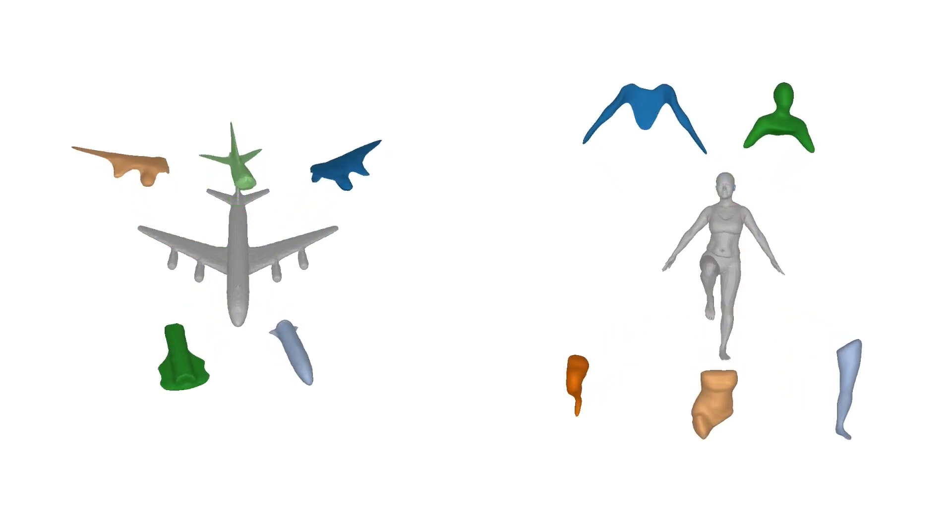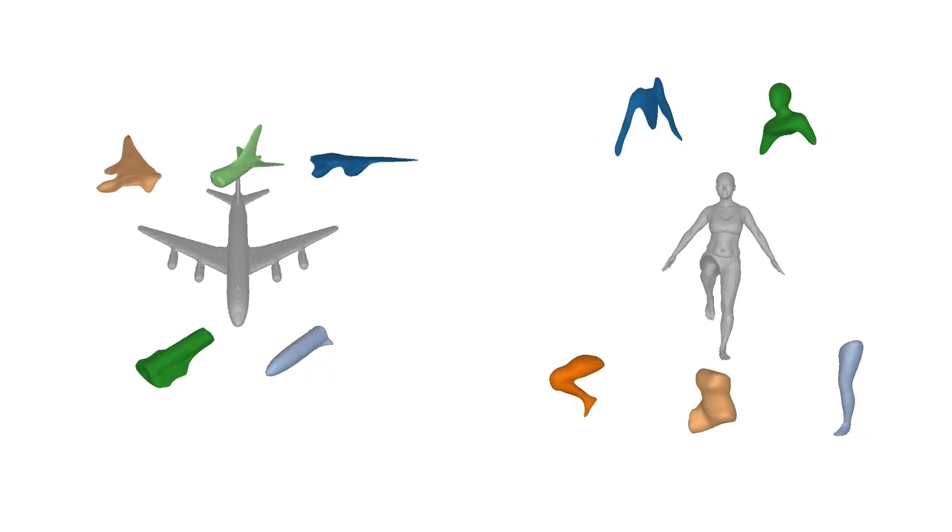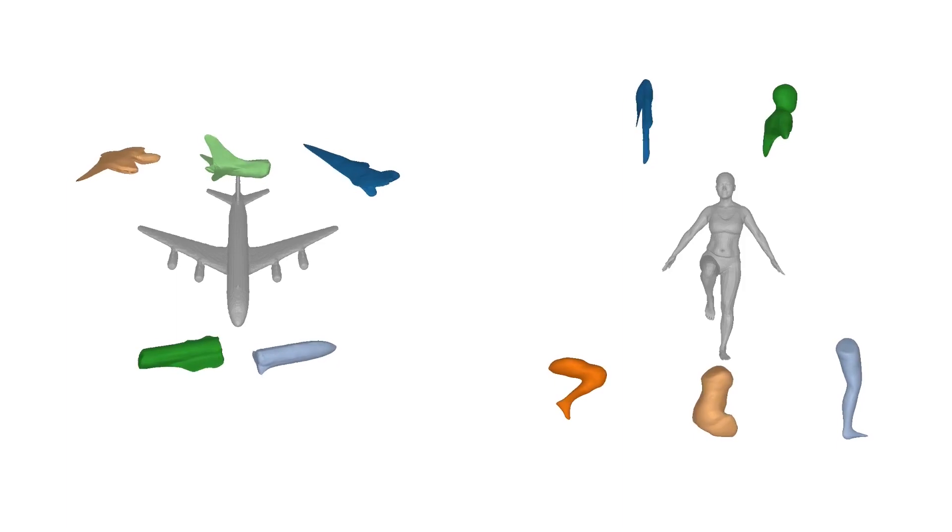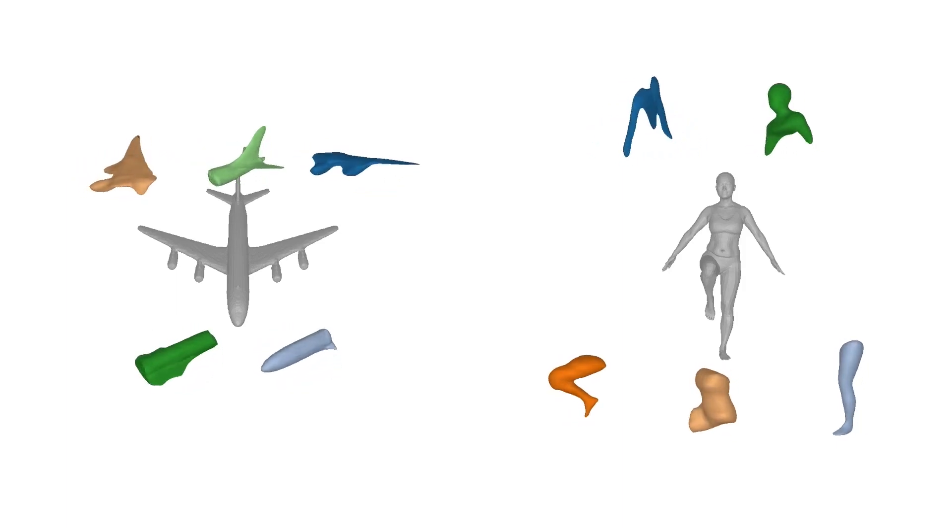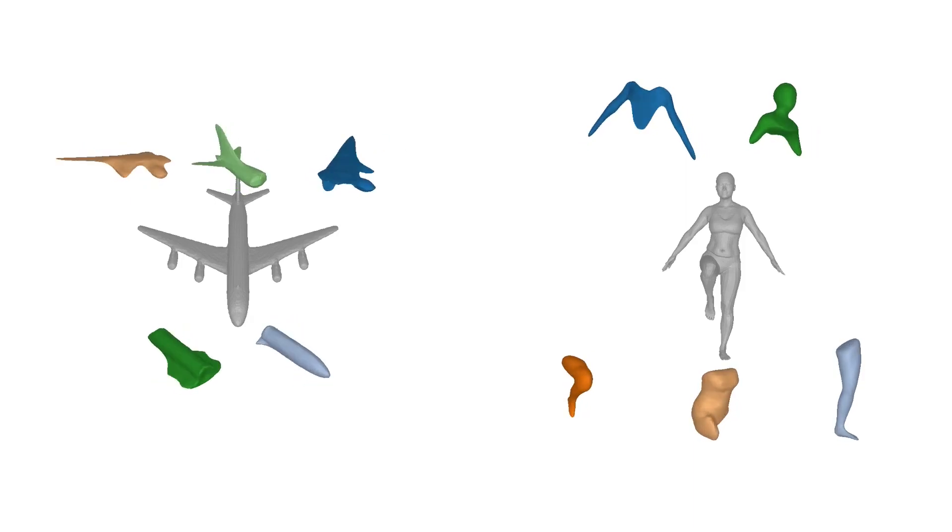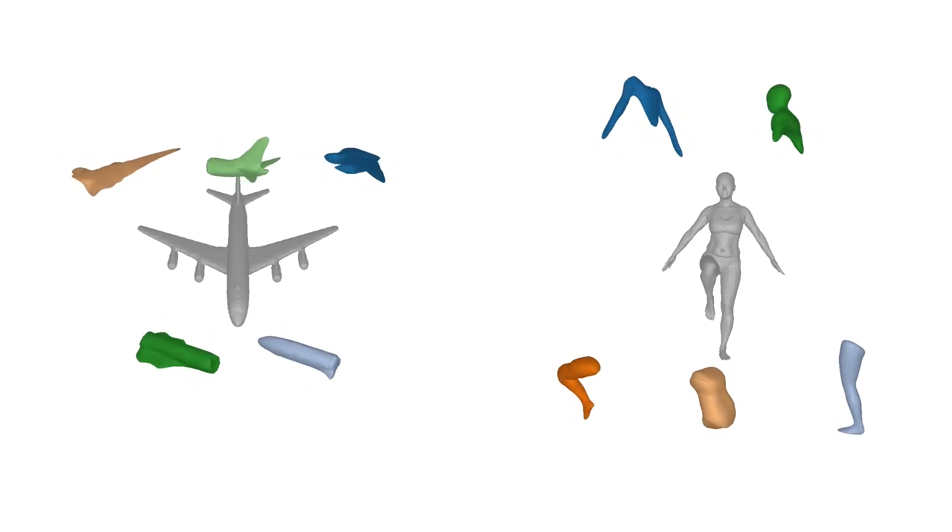To address this, we introduce neural parts, a primitive representation that is not limited to a specific family of shapes, which results in geometrically more accurate and semantically more meaningful abstractions compared to simpler primitives. For example, reconstructing planes and humans with neural parts results in clearly identifiable semantic parts, such as legs and arms for humans, and wings and tails for planes.